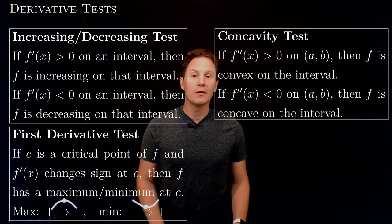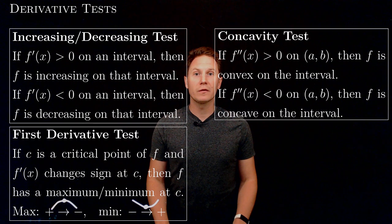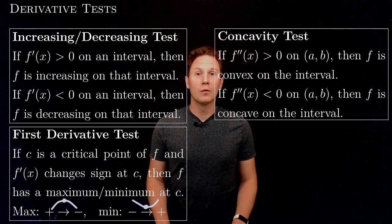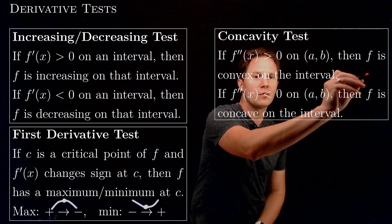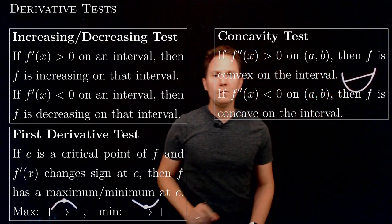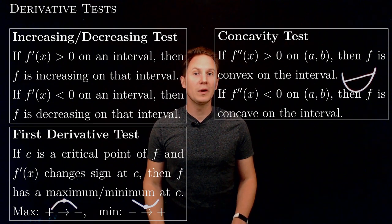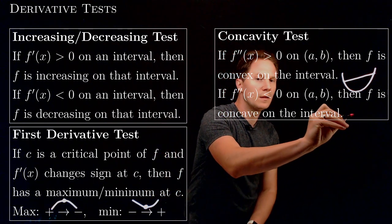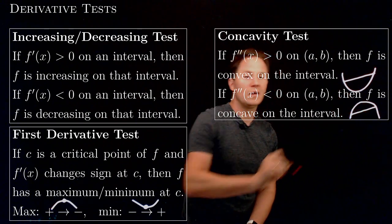The concavity test involves the second derivative of our function, and it tells us that if the second derivative is positive on an open interval, then the function is convex on that interval. Convex means that the function's graph is below any secant line, whereas if the second derivative is negative on an open interval, then the function is concave on that interval, and concave means that the graph of the function is above secant lines.